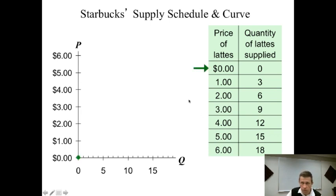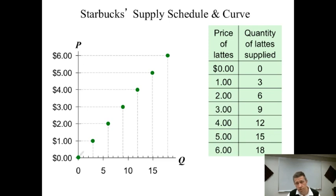Okay. Price of zero, zero supplied. That's an easy enough point to plot. At a price of a dollar, three lattes would be supplied. Price of two dollars, six lattes would be supplied. Three dollars, nine lattes would be supplied. And it keeps going up. Four dollars, 12, five dollars, 15, and six dollars, 18. So we have several points on our graph, connect them together with a line. Label it with an S. S for supply. I usually would put it right up about here somewhere. So label it with an S. And you've just plotted the supply curve.